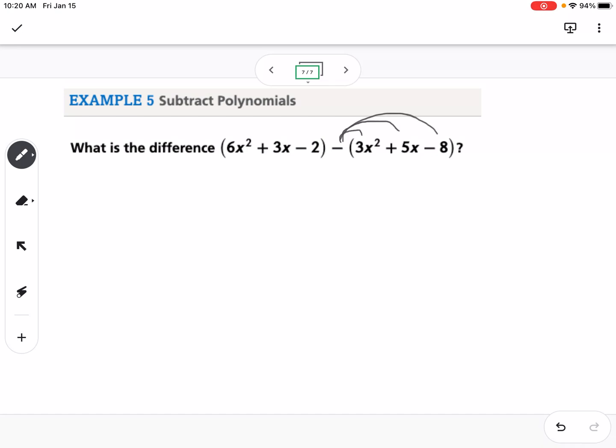So basically I'm going to multiply everything in the second parentheses by negative 1. So I'm going to rewrite, I have 6x squared plus 3x minus 2, there's my first polynomial, then I'm going to distribute. So negative 1 times 3x squared would be minus 3x squared, and then negative 1 times 5x would be minus 5x, and then a negative 1 times a negative 8 would be plus 8.